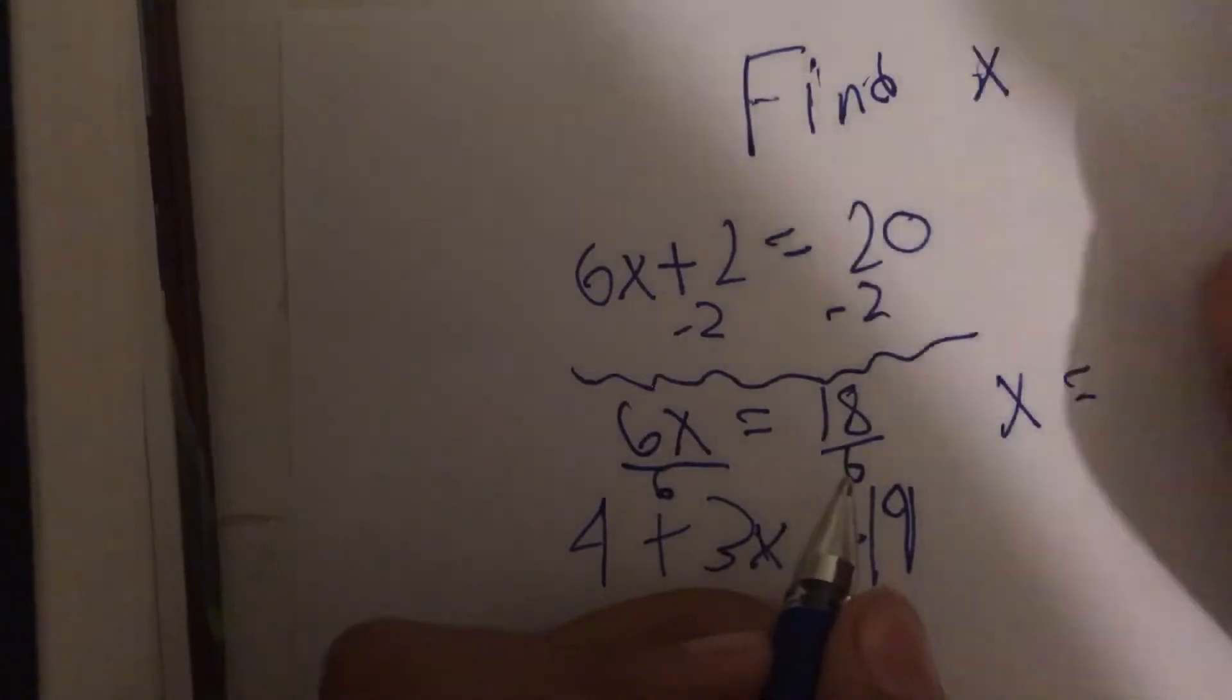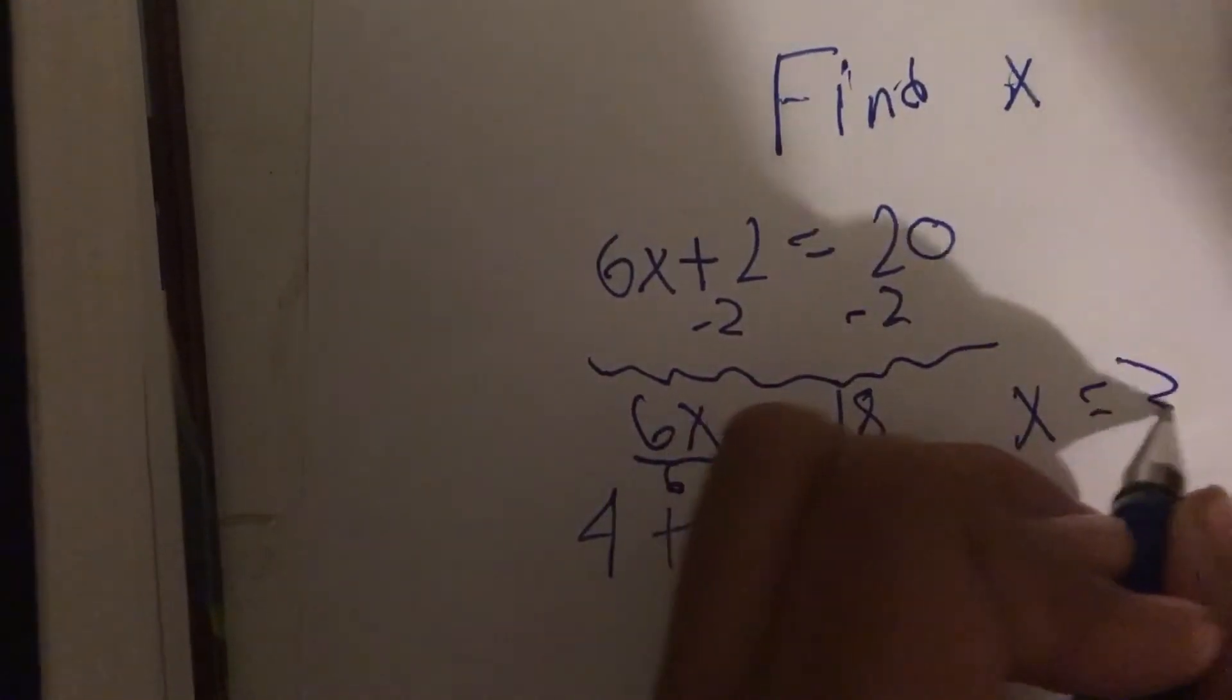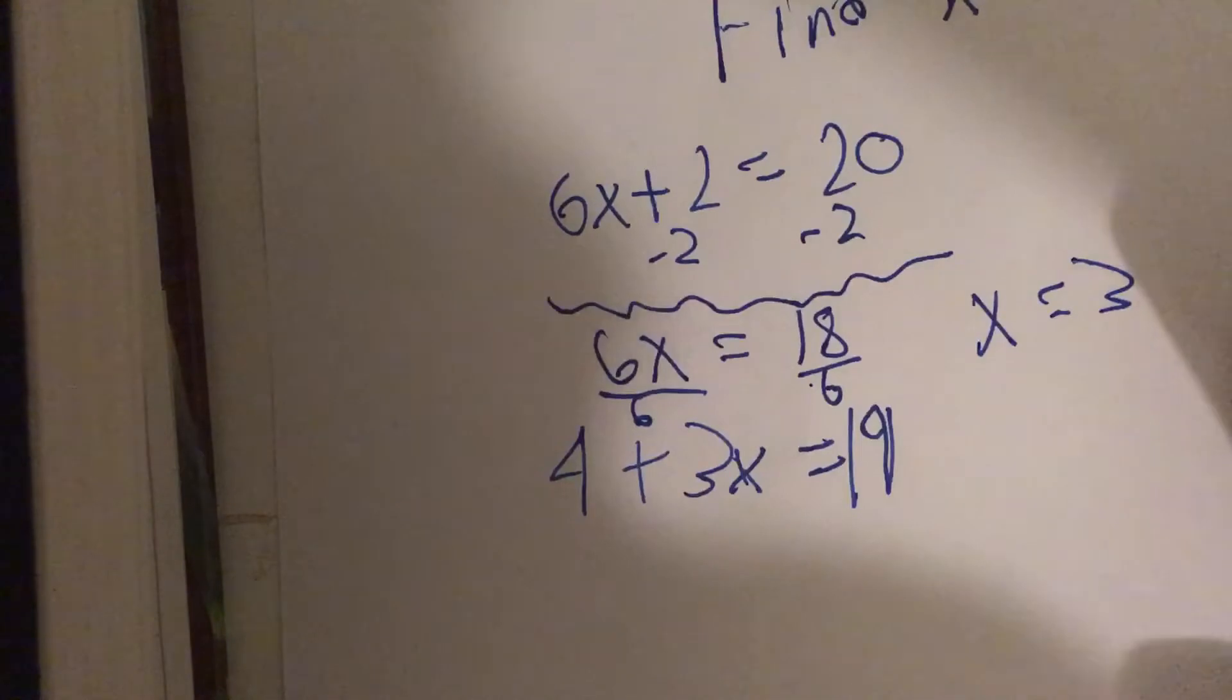Equals 18 divided by 6, that equals 3. So, x equals 3.